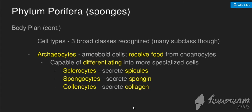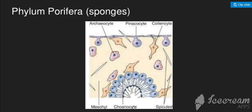The next cell type is archeocytes. The collar cells receive food and transfer it to the archeocytes, which are specialized and can differentiate into other cell types. These include sclerocytes, which produce spicules; spongiocytes; and collencytes, which produce collagen. The outer layer of the sponge consists of pinacocytes.